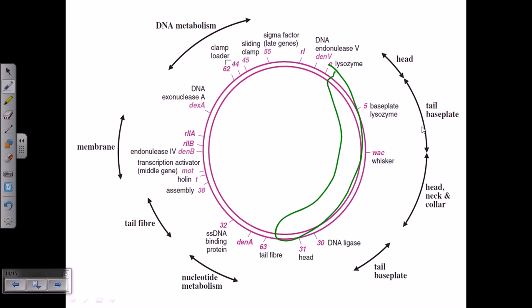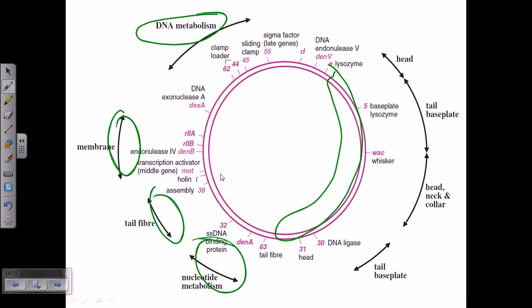Different genome regions encode structural genes for the head, tail, neck, and collar, as well as regions for DNA metabolism, membrane formation, tail fiber synthesis, and nucleotide metabolism. GP proteins are important for structural purposes, while DexA, DenB, and other proteins serve other functions. T4 phage does not require a lysogenic/lytic switch because it is not a temperate phage, making its genome less complex than lambda phage.